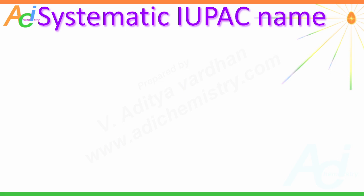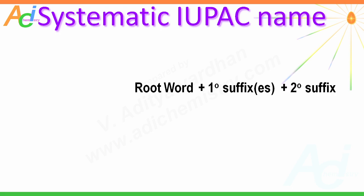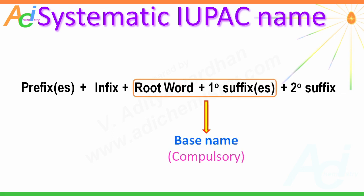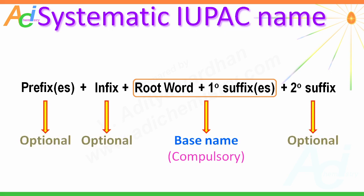According to IUPAC nomenclature, an organic compound consists of a root word followed by a primary suffix or suffixes, which in turn may be followed by a secondary suffix. There may also be a prefix or prefixes and an infix before the root word. The combination of root word and primary suffix is referred to as the base name and is compulsory, whereas the secondary suffix, prefix, and infix may or may not appear in the IUPAC name.